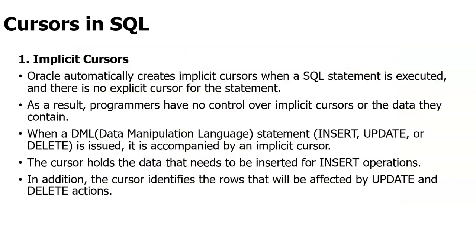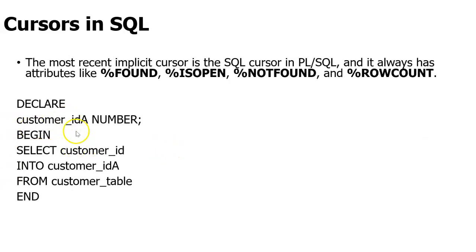An implicit cursor means it automatically creates some implicit cursor when the actual statement is executed — there is no explicit cursor for the statement. You will have the data that needs to be inserted; it does not have any value passed there. It will have some statements and syntax only. You will be defining everything in the implicit cursor. For example: DECLARE customer_ID_A as number; then BEGIN; SELECT customer_ID INTO customer_ID_A FROM... So we are just passing the terms, what should be done and where. Attributes like FOUND, IS OPEN, NOT FOUND — these are the commands.